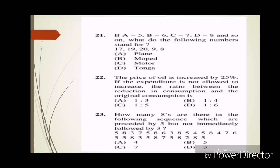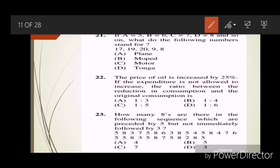Question twenty-one: If A=5, B=6, C=7, D=8 and so on, what do the following numbers stand for: 17, 19, 29, 8? Answer will be B, morbid.